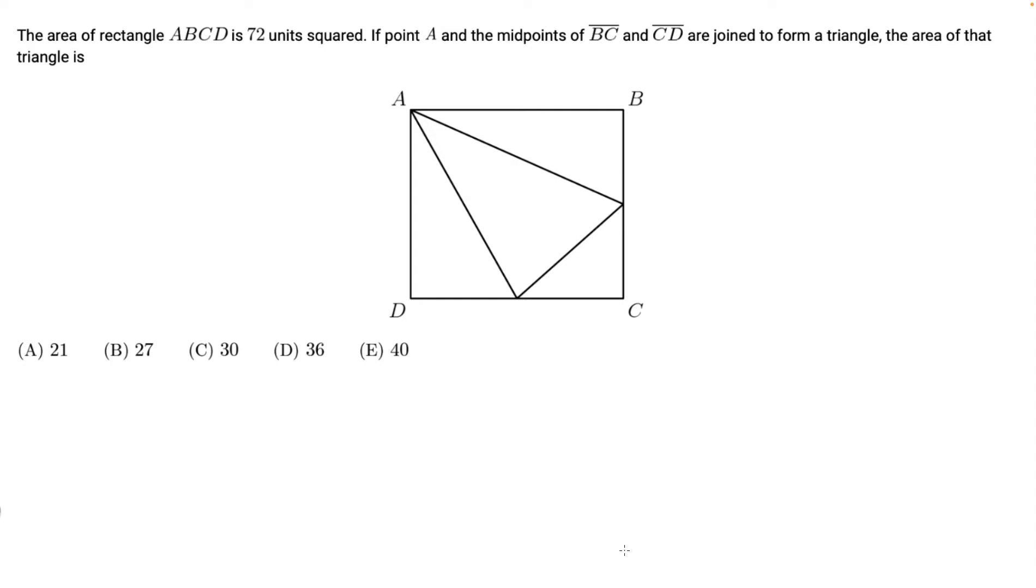We have line BC and CD joined to form a triangle, and they're the midpoints, so this side and this side are equal. And then this side and this side are equal, since it's the midpoint and it's equally divided.